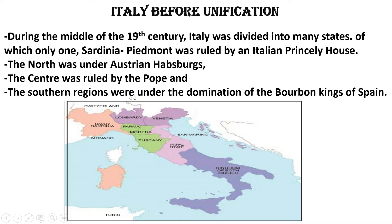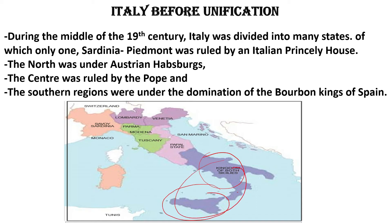The southern regions were under the domination of the Bourbon kings of Spain. Here you can see the blue color — the Kingdom of Both Sicilies and the lower part. These two islands are the southern part of Italy, and the power over these two was held by the Bourbon kings — the same Bourbon kings as we have seen in France, who are distant relatives.